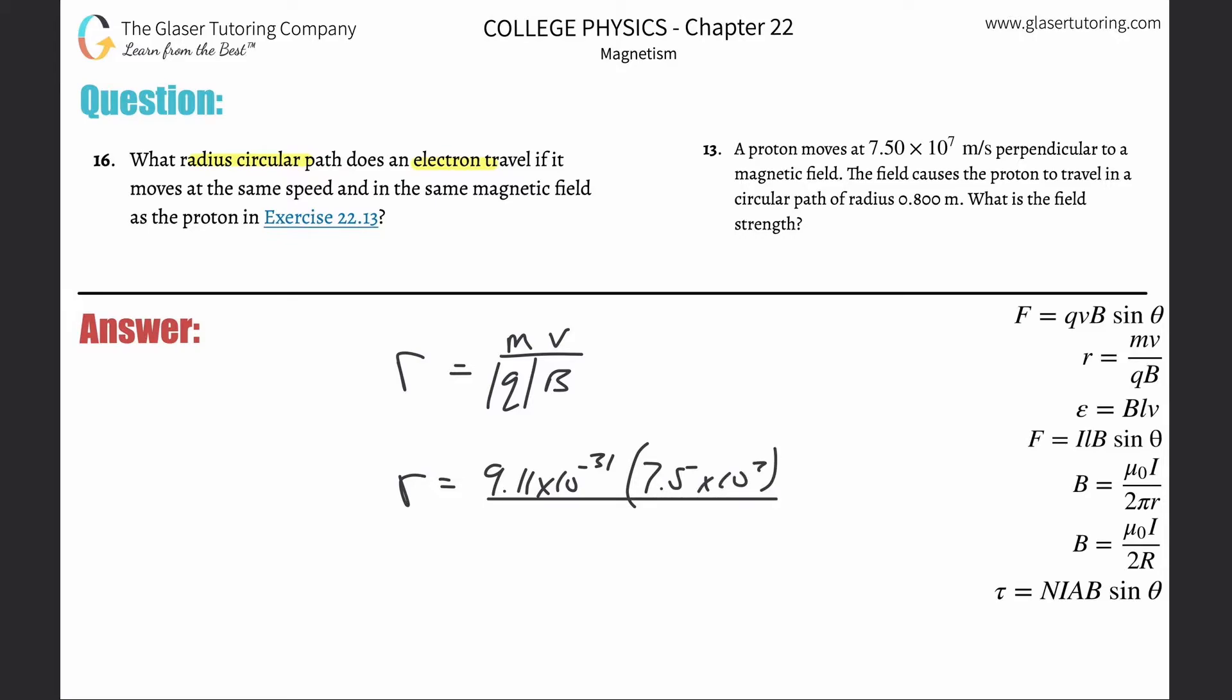The charge - the absolute value - it is an electron but we just care about the magnitude, the value of the charge of an electron. And then the magnetic field - they didn't tell us anything, but we have to take the answer from number 13, which was 0.979 Tesla.